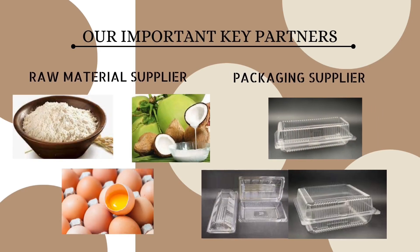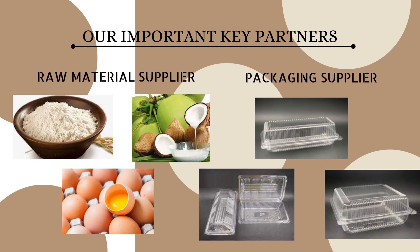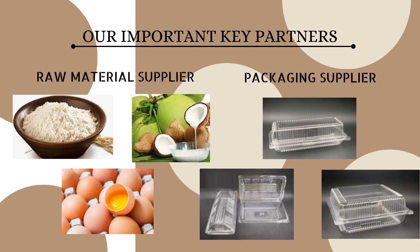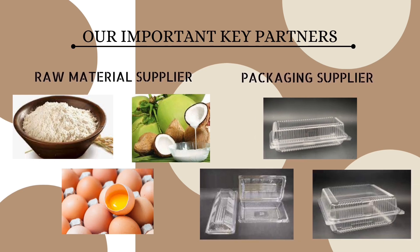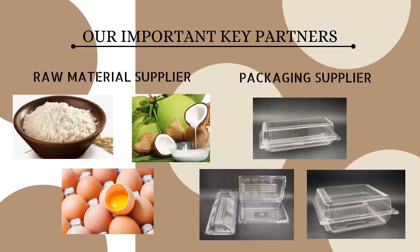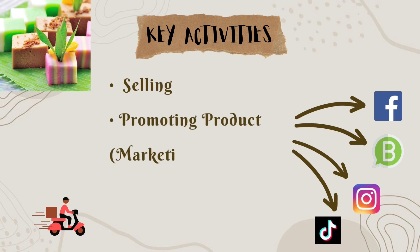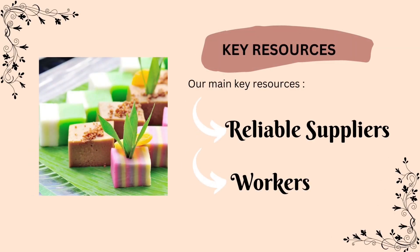In our company we have two important key partners: the first one is raw material supplier and the second one is packaging supplier. Our key activities include selling traditional cake, marketing using social media like Facebook, WhatsApp, Instagram, and TikTok, and delivery services for online orders.